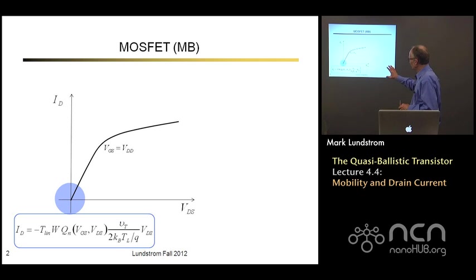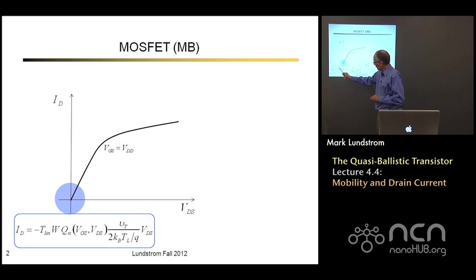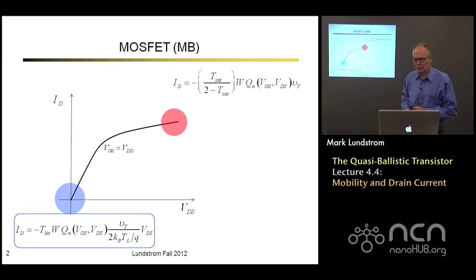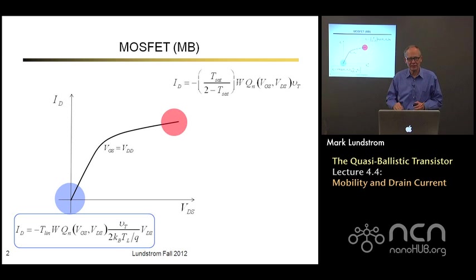Let's review the model one more time. We have this scattering model in Maxwell-Boltzmann statistics — the mathematics is a little simpler — and we have current that's proportional to a transmission for small drain-to-source voltage. It's a little more complicated because of the necessity of maintaining charge balance when we go to high drain bias, and we get a transmission over 2 minus transmission. These two transmissions are different in the linear region and the saturated region.